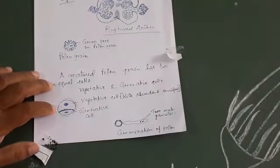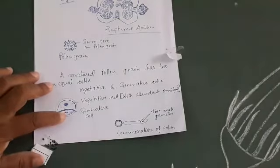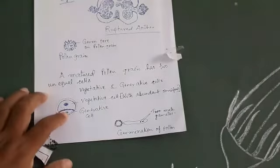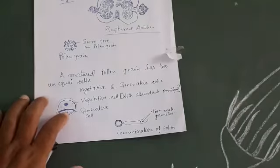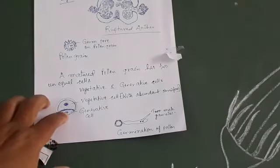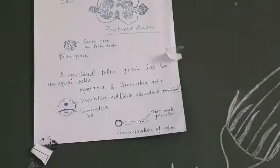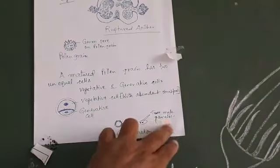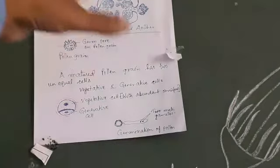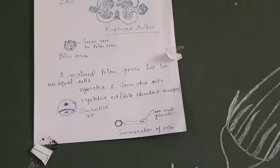The generative cell is the smaller one with a spindle-shaped nucleus. This nucleus undergoes meiotic division, forming two nuclei. These two nuclei are the male gametes. This is all about the germination of pollen grain.